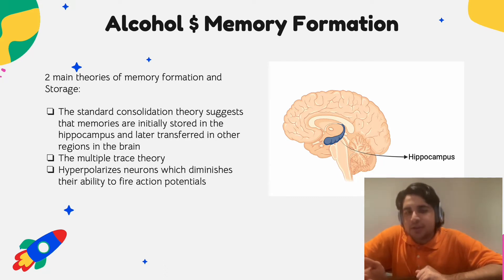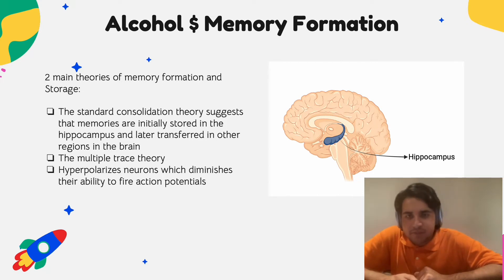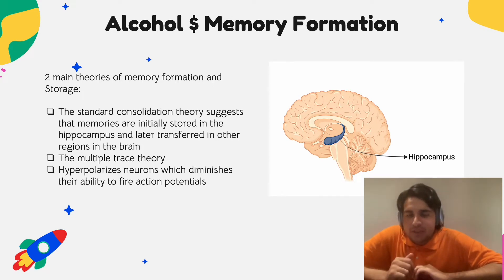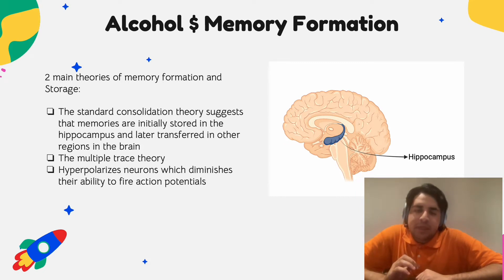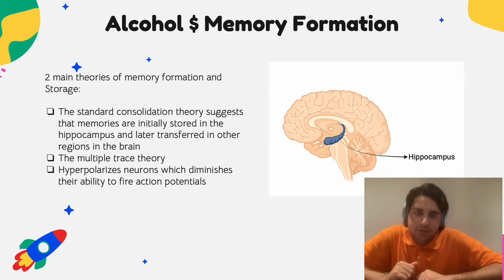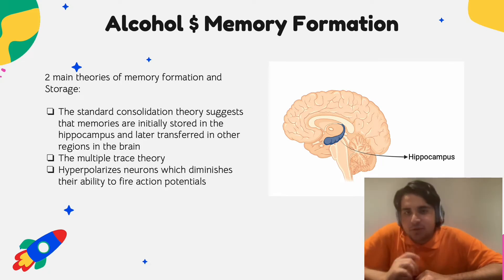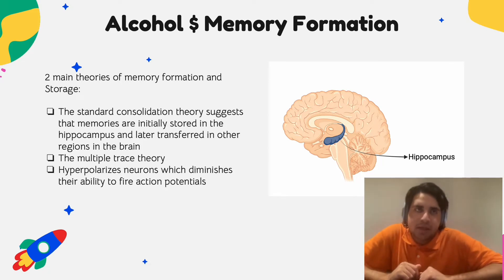The standard theory of memory formation doesn't distinguish between these memory types. It says that both semantic and episodic memories are first stored in the hippocampus, and as time goes by the memories get transferred to the cerebral cortex or other regions of the brain, and the hippocampus's role in memory recall and storage diminishes over time.